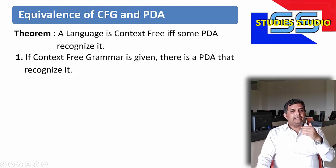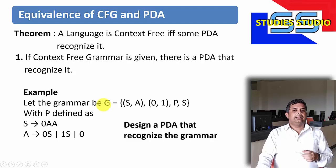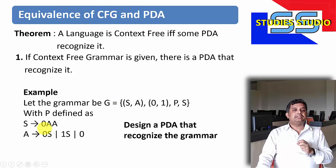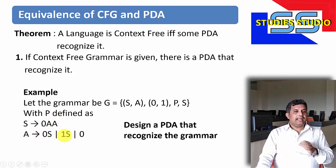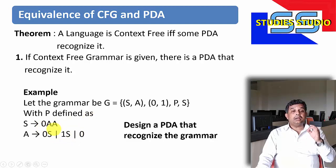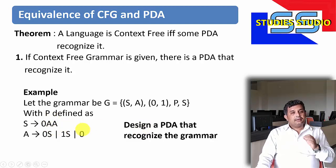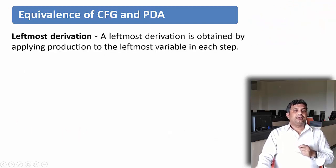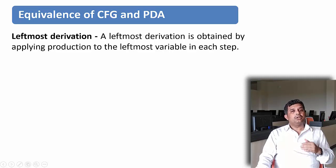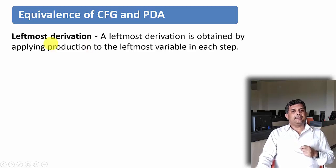Let us see the first part today. If a context-free grammar is given, let us say the grammar is defined as: S derives 0AA, and A derives 0S or 1S or 0. Then I want to design a pushdown automata that will recognize the string generated by this particular grammar. But before that, we must know about the leftmost derivation, because we are going to use the leftmost derivation while using pushdown automata.